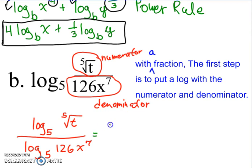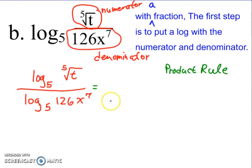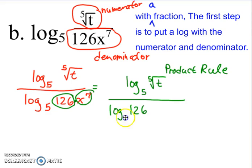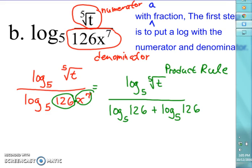The first thing we do is the product rule. Is there any multiplication happening here? Yes — it's right there in the numerator. So we leave the denominator alone, do not touch it, and apply the product rule to the numerator, splitting it and putting addition in the middle.